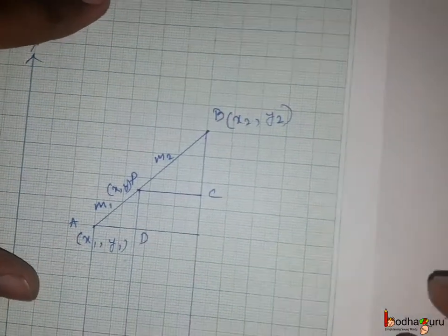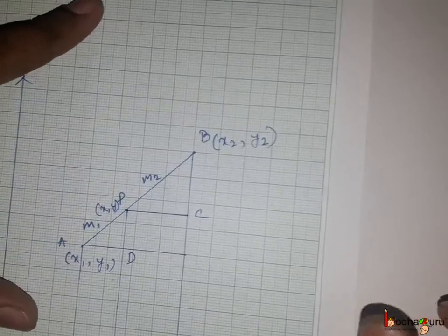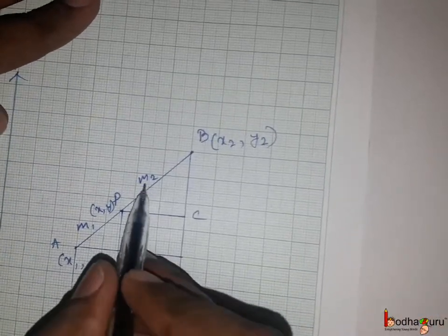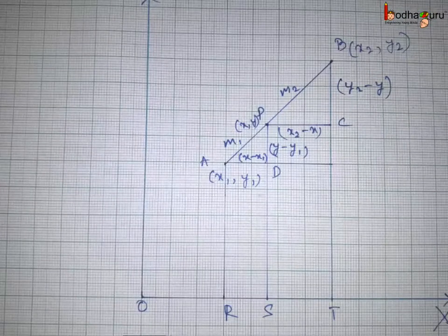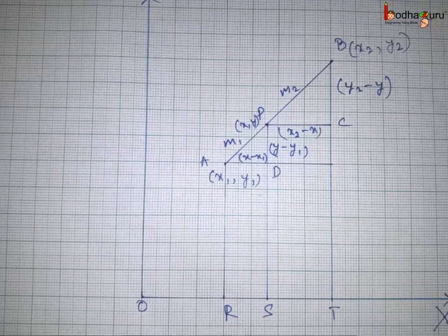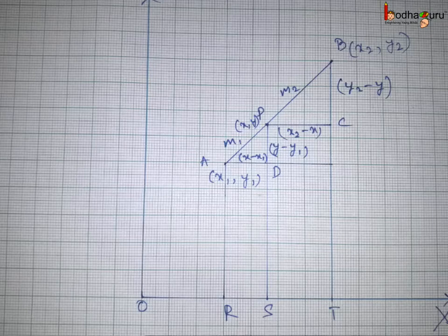To make it generic, say point P divides AB internally in M1 to M2 ratio. Say coordinate of point P is (x,y) which we want to find. So AP by PB is equal to AD by PC equal to PD by BC which is equal to M1 by M2.